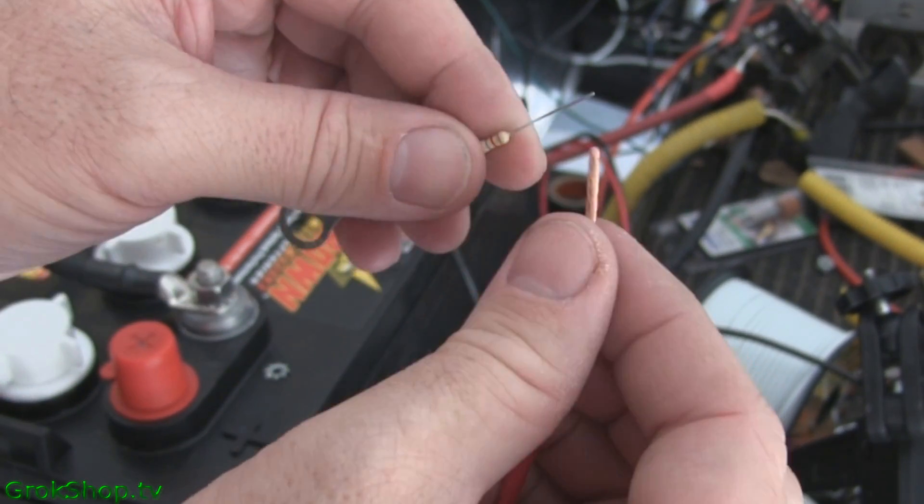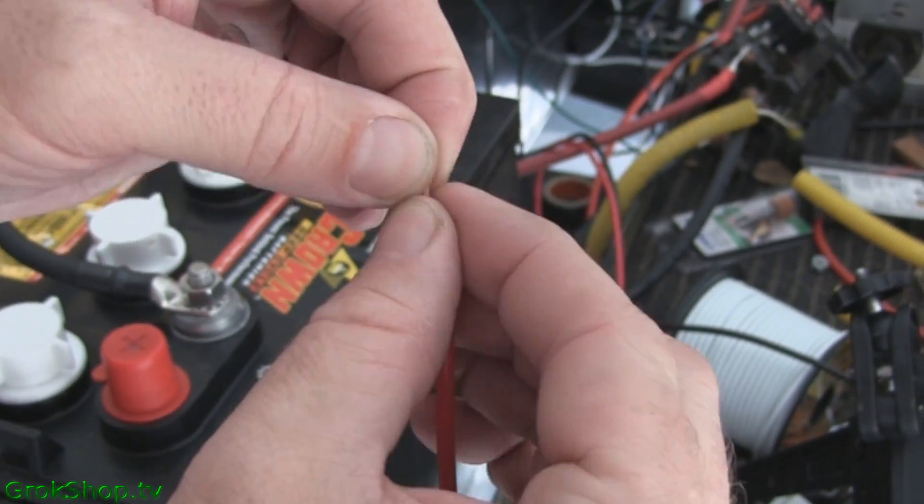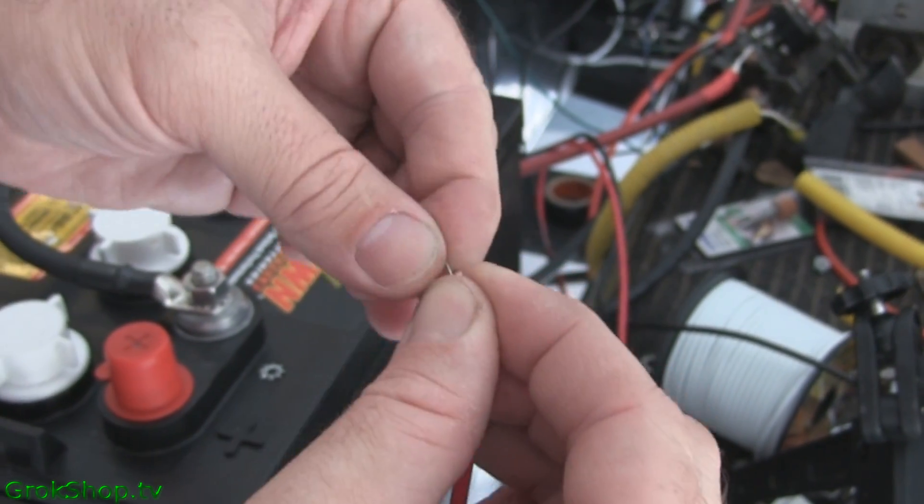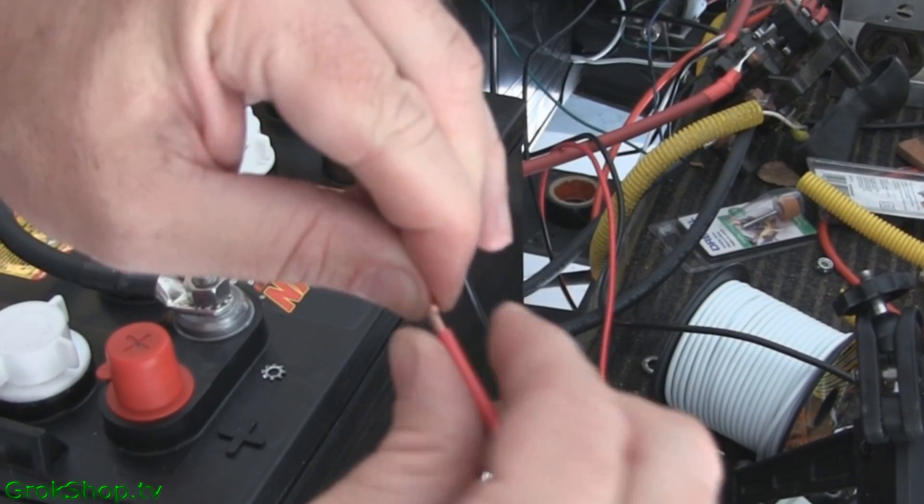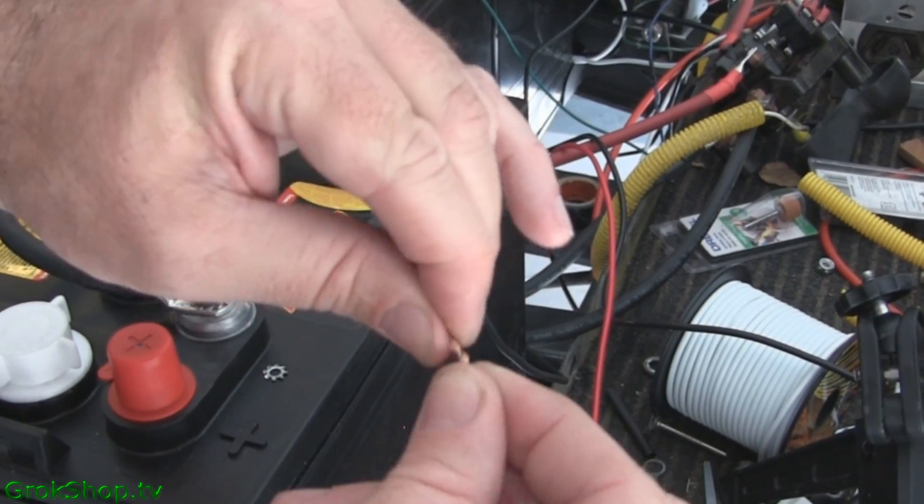So by a cross-twist, what I mean is just make a plus sign or an X, and each lead gets wrapped around the other lead. Makes for a very tight connection, good soldering, and also heat shrink goes on very well.